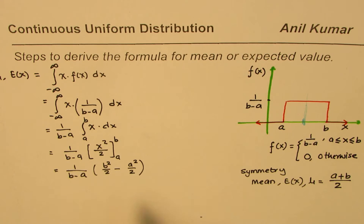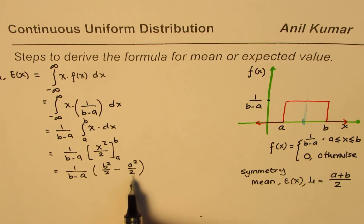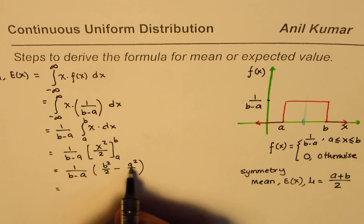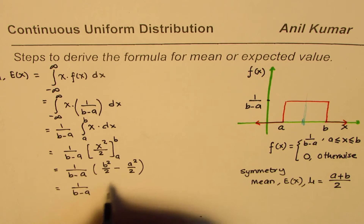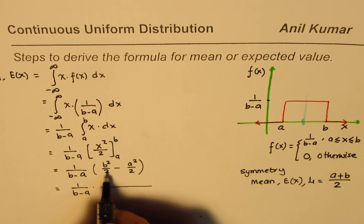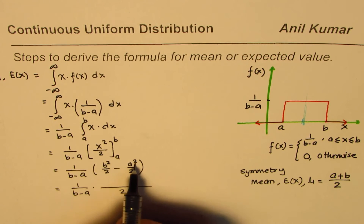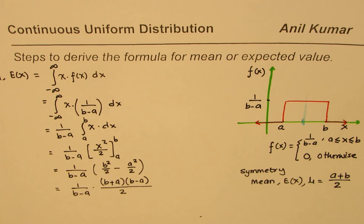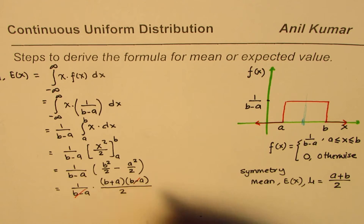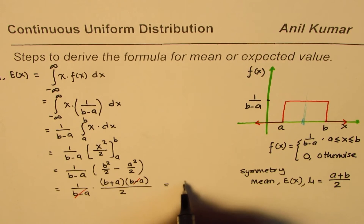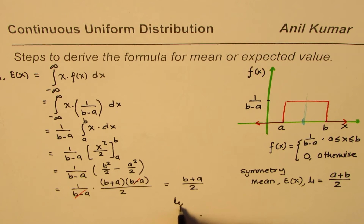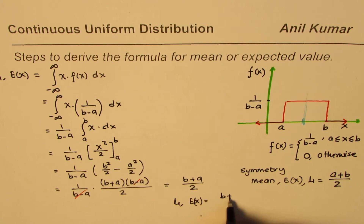Now b squared minus a squared can be written as b plus a times b minus a — the difference of squares factoring. So we have 1 over b minus a times b plus a times b minus a, all over 2. We can cancel the b minus a terms, giving us b plus a divided by 2.